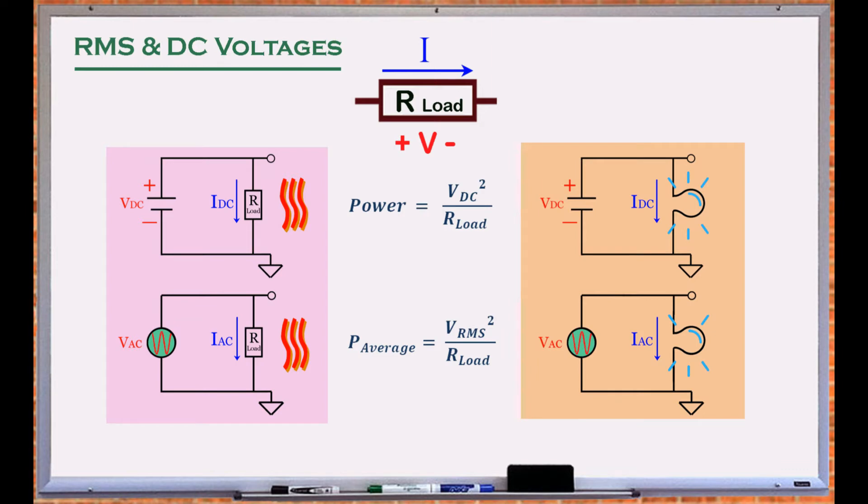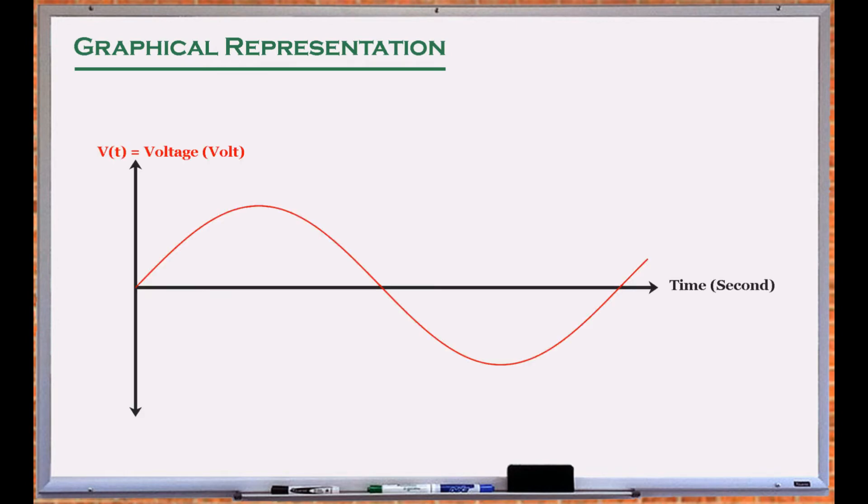There are different methods to derive the RMS value of an AC signal such as a sine wave. One way is graphically. Let's consider a sine wave with an amplitude of Vp. The instantaneous power generated by the sine wave across a 1 ohm load is the sine wave squared.